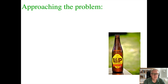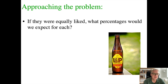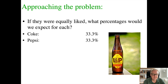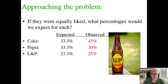To approach this problem, think about what would happen if these drinks were equally liked. If there was no bias in that population, what percentages would we expect for each? If you have three different drinks and they're all equally preferred, Coke should come out 33.3% of the time, Pepsi would come out 33.3% of the time, and L&P would be 33.3% of the time. We call these our expected values — expected frequencies or percentages.